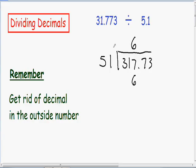And 6 times 5 is 30. And if we subtract the two numbers, we get 7 minus 6, which is 1. And 1 minus 0, which is just 1. And I'll bring down my 7. So 51 goes into 117 how many times? Well, we know that 50 goes into 100 two times. So I'll guess that 51 goes into 117 about two times. And 2 times 1 is 2. And 2 times 5 is 10.